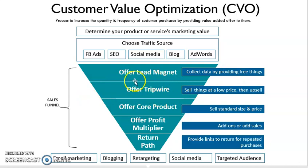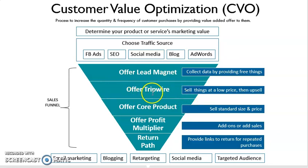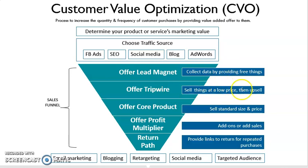After we collect some information from the customers, then we know that they are the prospect customers. So we are trying to sell things to them by offering a tripwire — in other words, we sell things at a lower price. We might sell them a small pack of product at a cheaper price, with a discount, so that they will try our product.